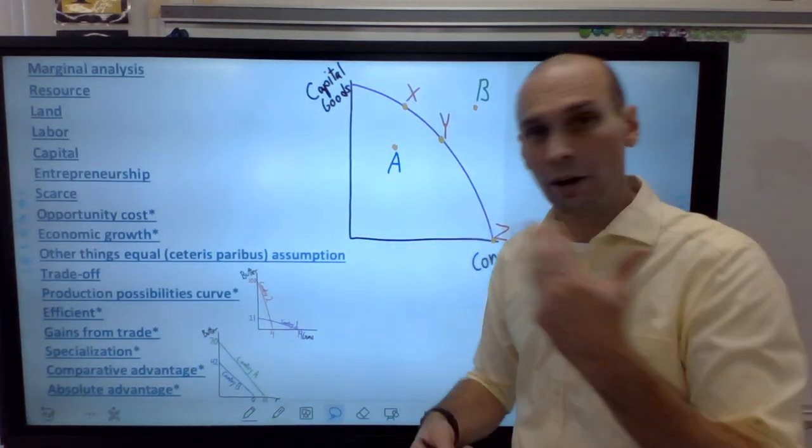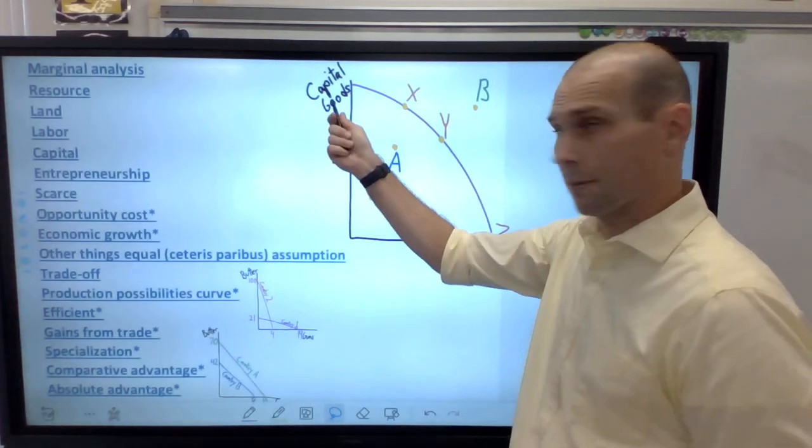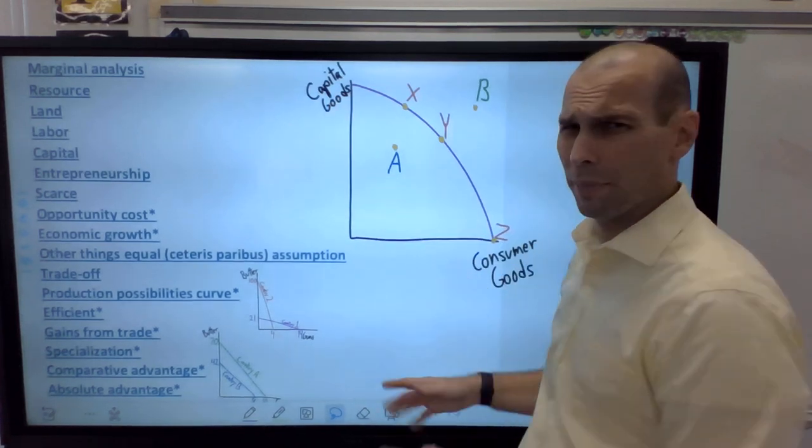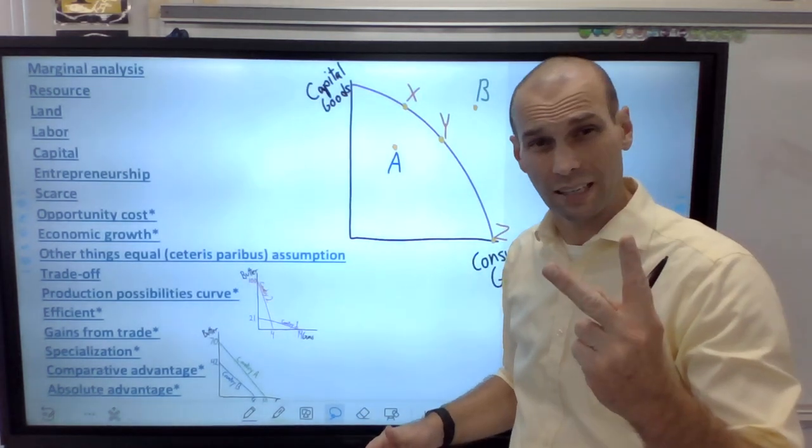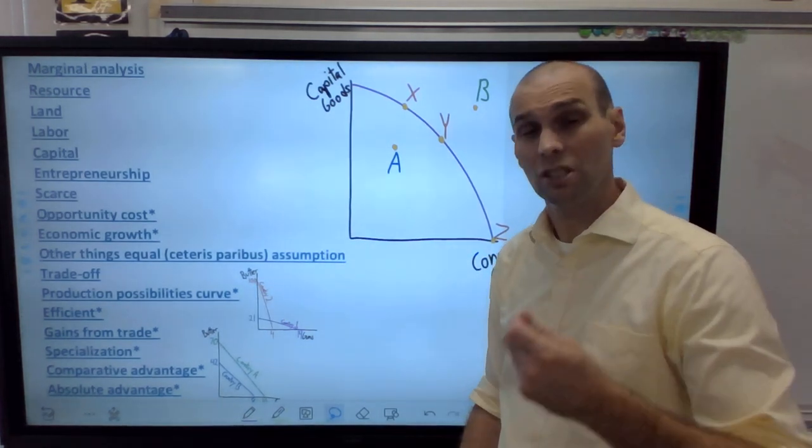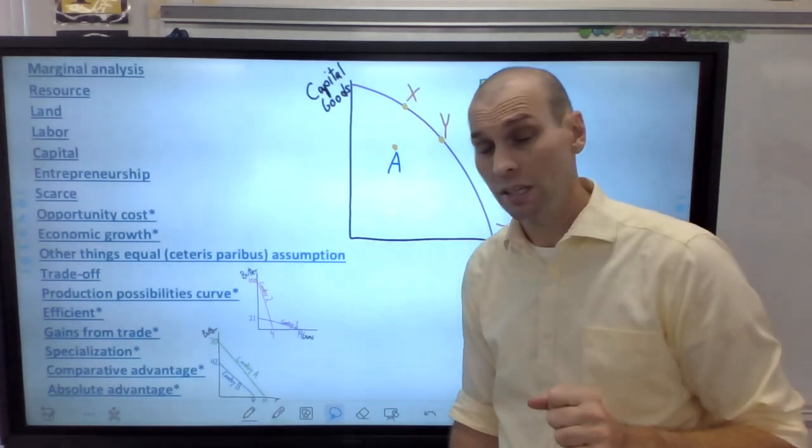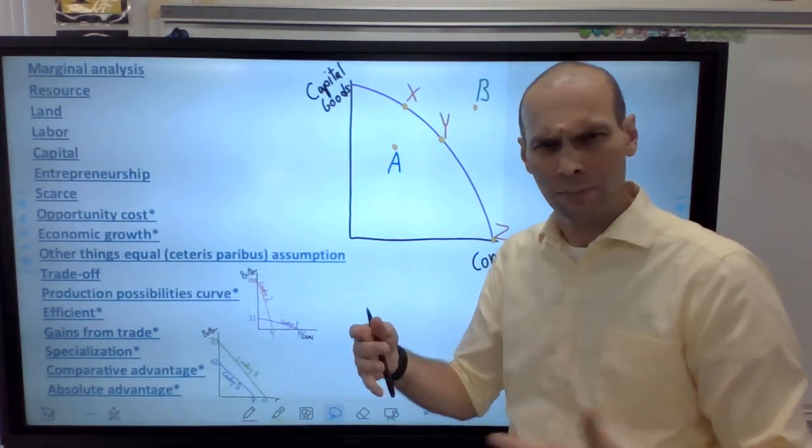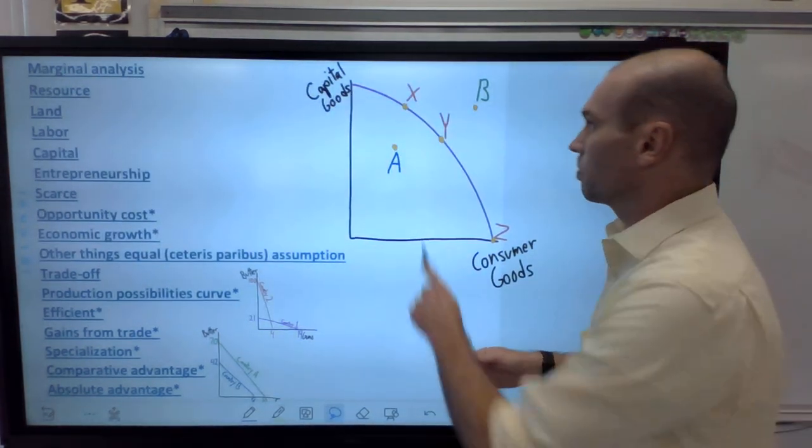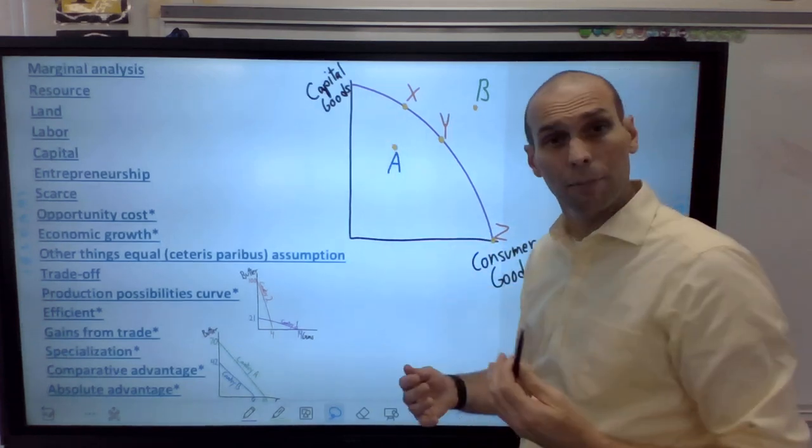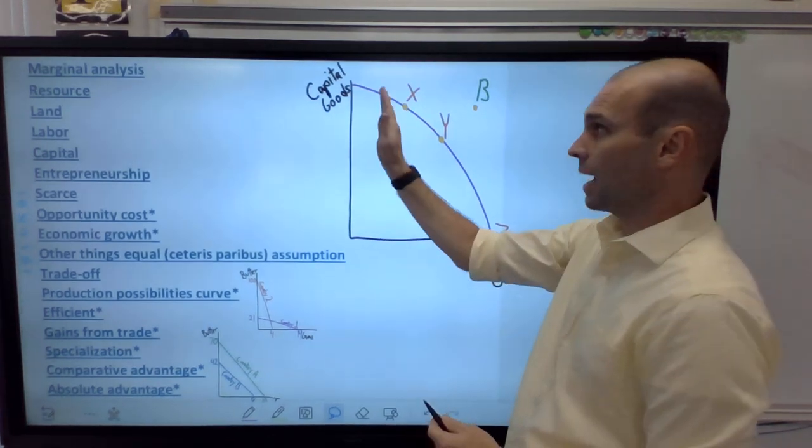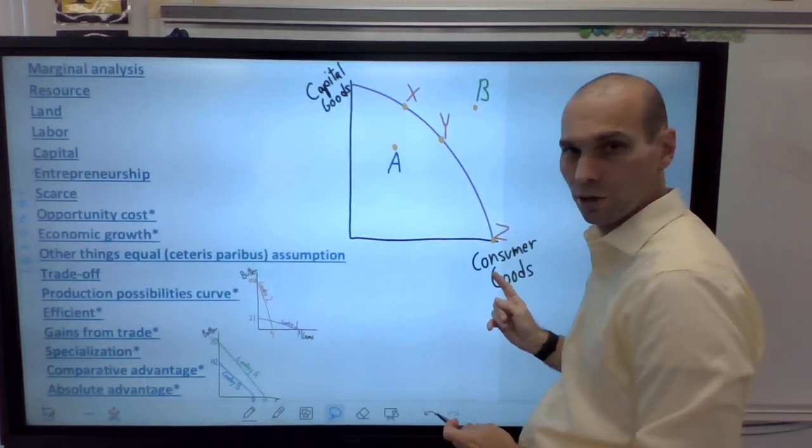So let's say we are an economy, and we only produce two things. We produce capital goods and consumer goods. Again, it could be apples, baseball bats, just two things. We're going to show how a production possibilities curve covers lots of economic concepts. That's why you're going to see it several times, especially later on on exams and AP exams.